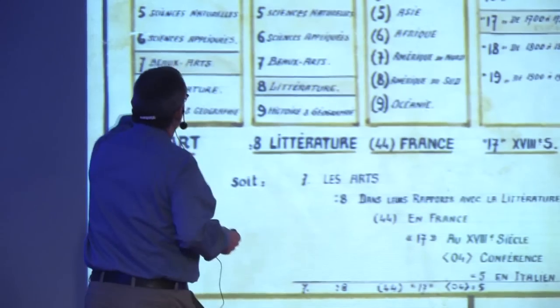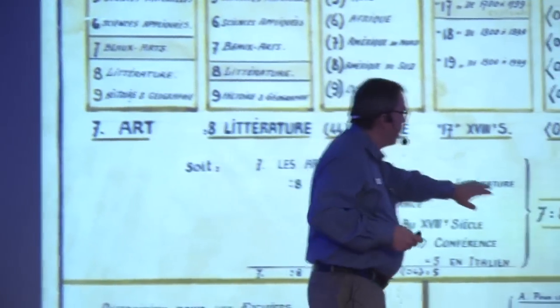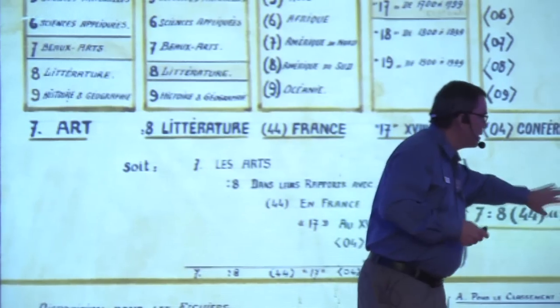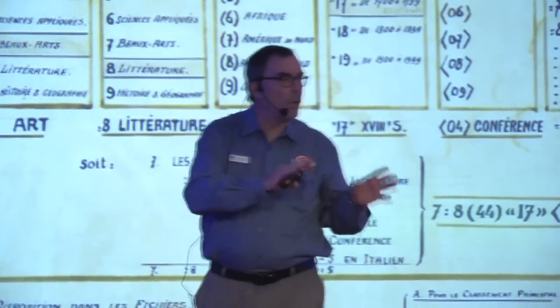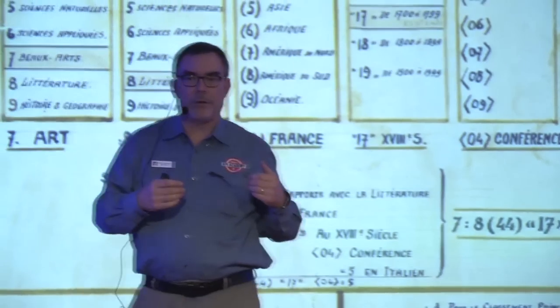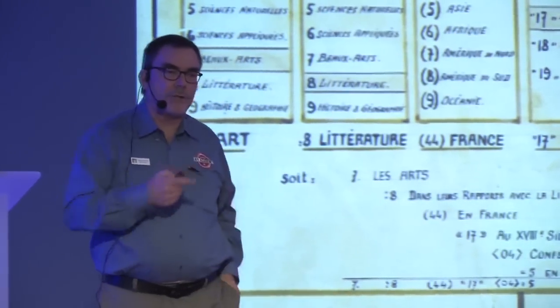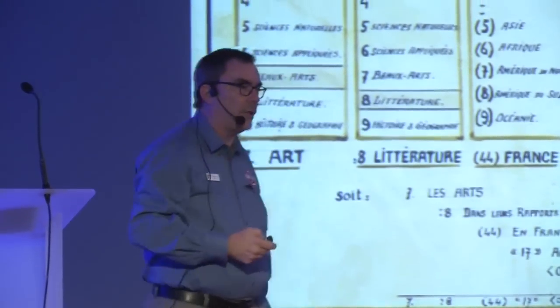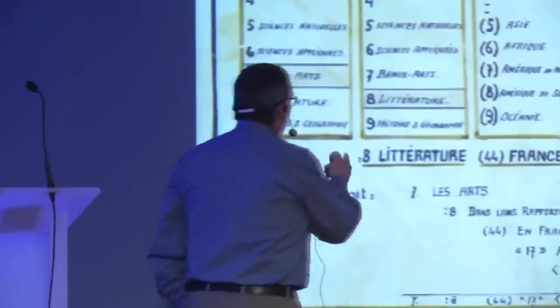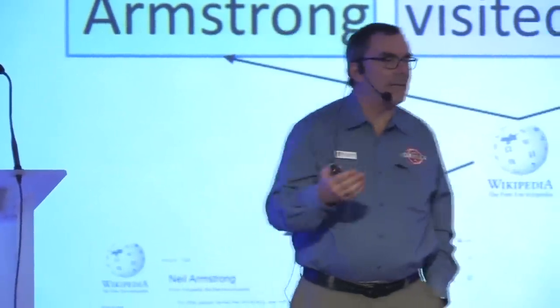Otlet didn't just use numbers — he also used colons, parentheses, and all sorts of other characters so that he could indicate relationships between one thing and another, one category and another, and cross-references. So this identifier is actually very rich with all sorts of information. It isn't just one thing — it says it's related to lots of things. In fact, several people who have studied this say that this idea looks an awful lot like the RDF triple stores that we have in the Semantic Web today. But this was designed in the 1920s.